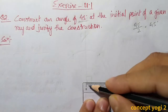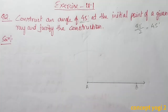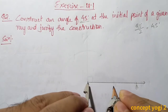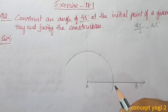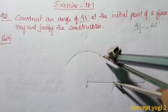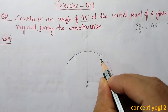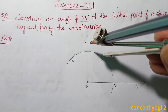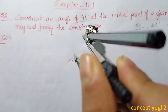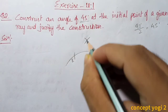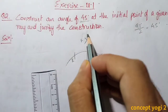First we'll draw a ray. Let AB be a ray. Keeping the compass at A and taking some radius, we'll draw an arc. The arc and the ray intersect at point C. Keeping the compass at C with the same radius, we'll cut the arc at two points D and E. Keeping the compass at D and E with radius more than half, draw two arcs that intersect at point F. Join A and F to get the 90 degree angle.